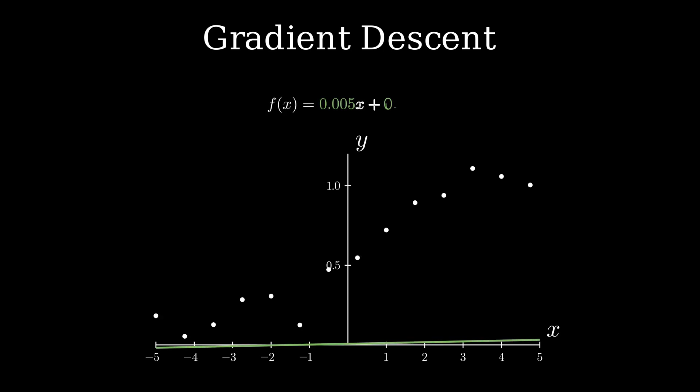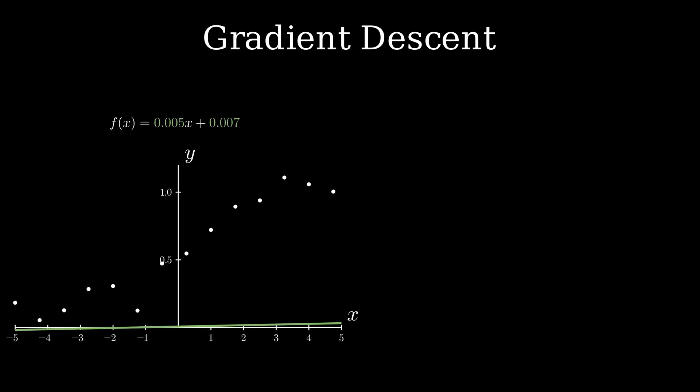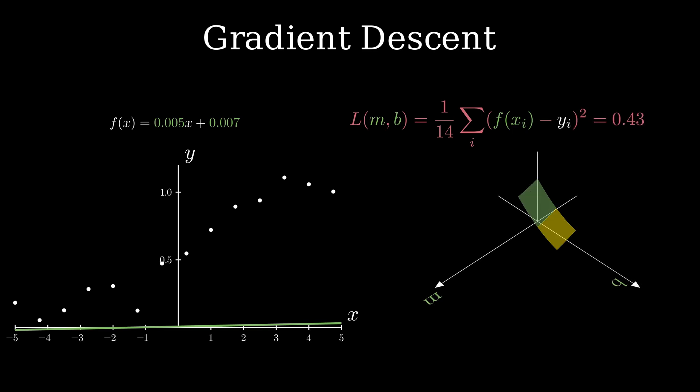The very first step here is to just make an initial guess on m and b. A common practice is to pick very small numbers for both. To visualize this, look at the plot of cost function where white dot indicates the current location. This can be seen as a problem of going downhill to reach the valley. However, I need to get the direction in which I should move and that's calculated by differentiating the cost function with respect to m and b.